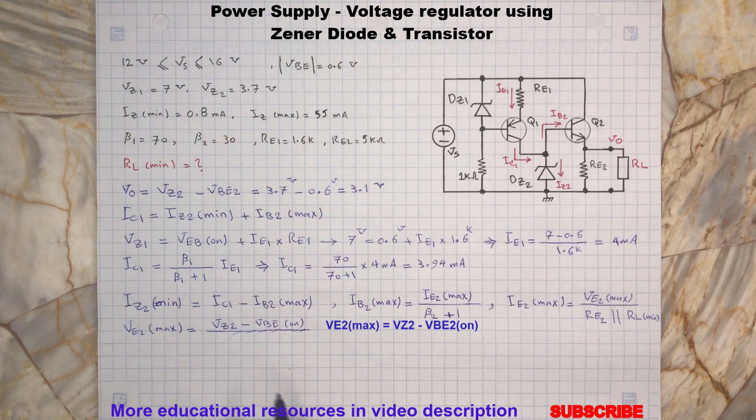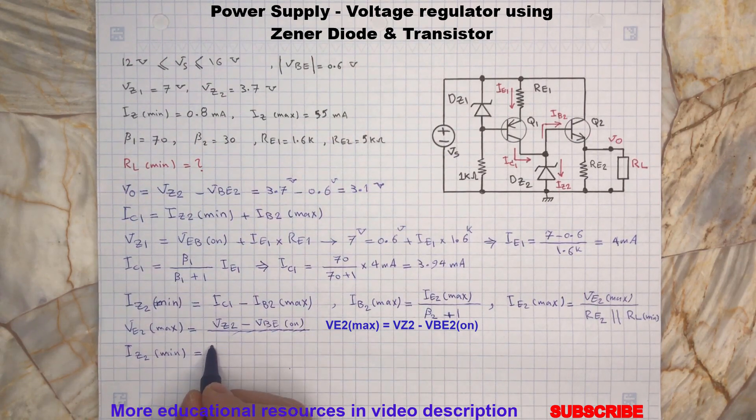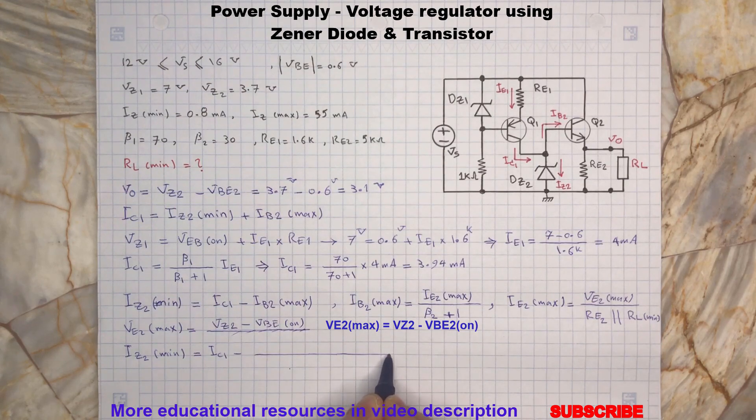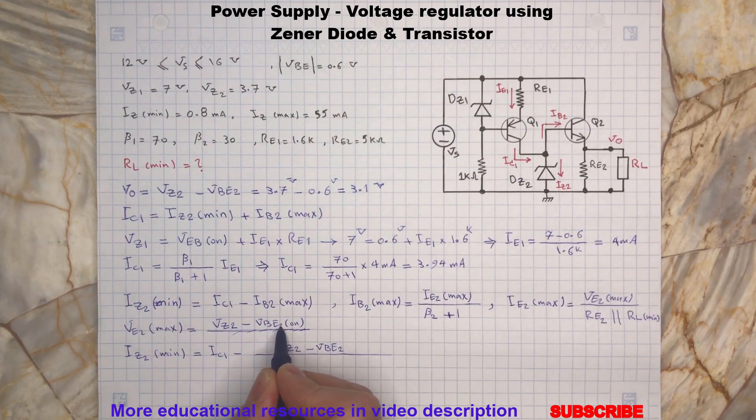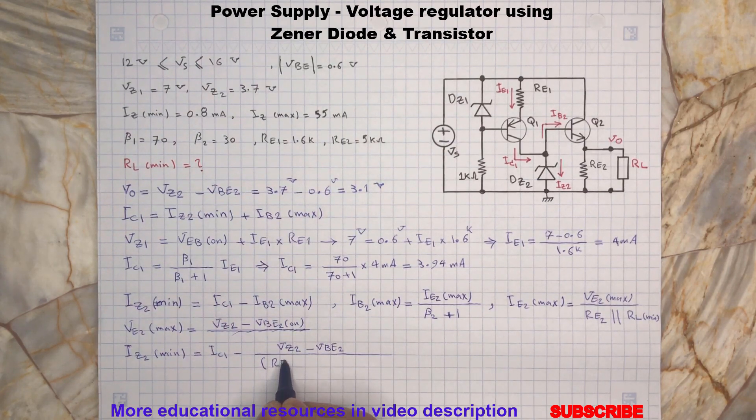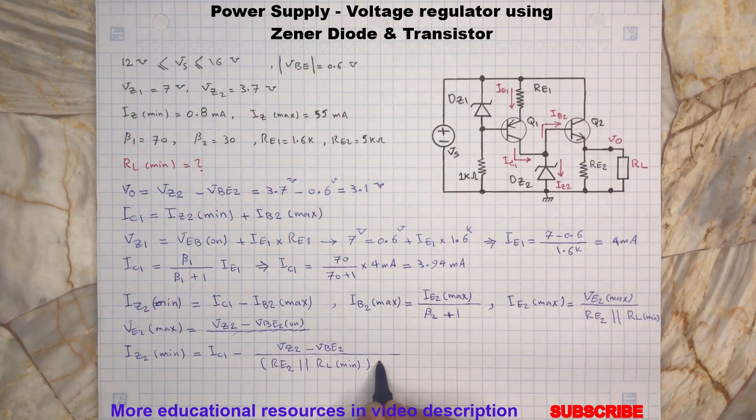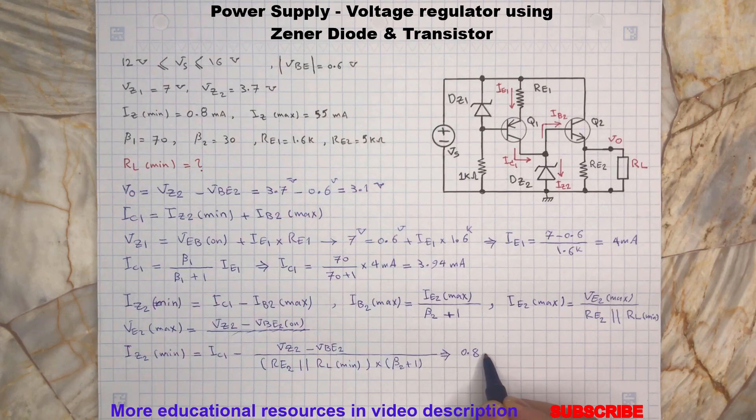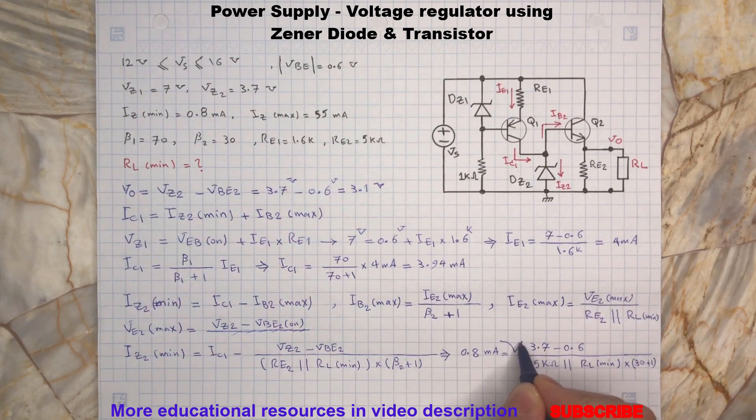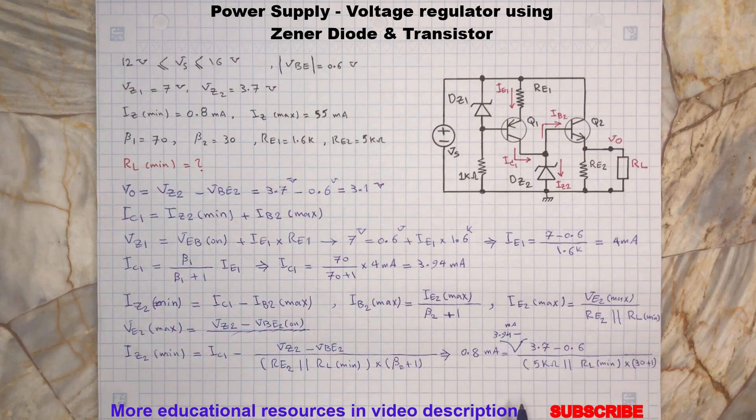So we will put everything in this equation. So, if you solve this equation, you will get the following for the RL minimum.